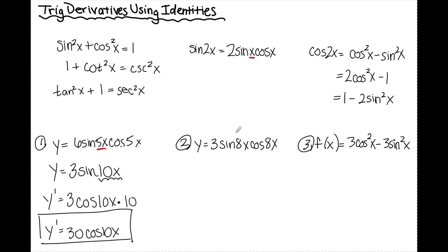Number 2: y equals 3 sine of 8x cosine of 8x. Again I could use a product rule, but it will take a long time. So I'm going to rewrite this using the sine of 2x formula. This is already in expanded form, so if this is 8x I'm going to double it — this becomes sine of 16x. Since there's a 2 in the formula, I halve the coefficient: 3 divided by 2 is 3 halves.